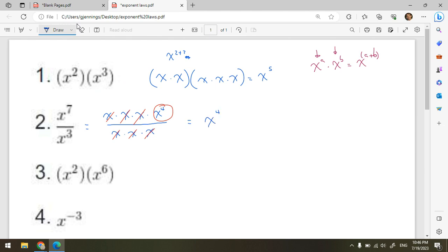And I want a rule for this. I see however number of copies of x I have downstairs will cancel that many copies of x upstairs. So my rule here, if I wrote this out, this is the same thing as saying x to the 7 minus 3.